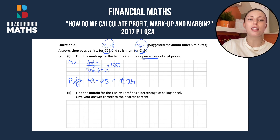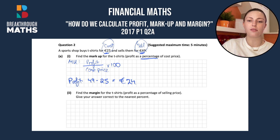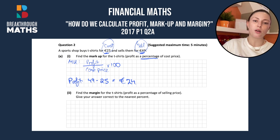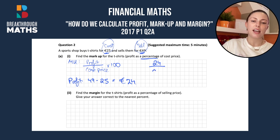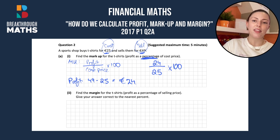So it's the money they make from selling at €49 even though they originally bought them for €25 — it's the difference between the two. To get the markup, we put that profit over the cost price: €24 over €25, multiplied by 100, which gives us 96% markup.